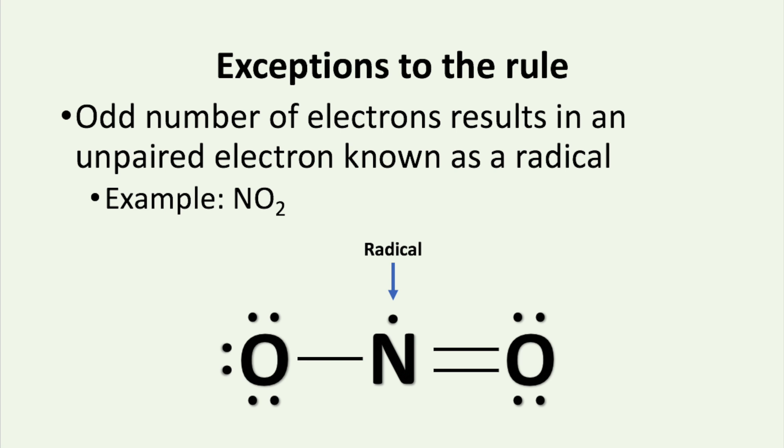Another such exception is when there are an odd number of electrons. This results in the presence of unpaired electrons, which we call radicals. An example of this is seen with NO2, which has 17 valence electrons. This results in an unpaired electron on the nitrogen.